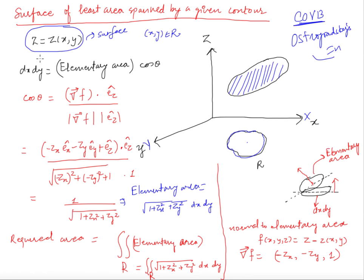You have this surface and you want to find out what this function z should be such that for a given region R the surface area is minimum. You are given this region R in the x-y plane and you have to find the function z such that the surface area is minimum. We want to find an integral which computes this surface area.